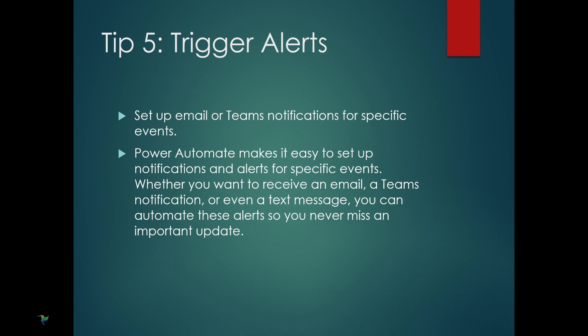Next up is triggering alerts in Power Automate. You can easily set up notifications for specific events — whether it's sending an email, a Teams notification, or even a text message. Automation ensures you never miss an important update, whether it's a project deadline, an approval request, or any other key event. By configuring these alerts, you will stay on top of things without constantly checking manually — Power Automate does it for you.